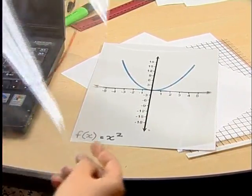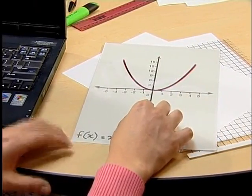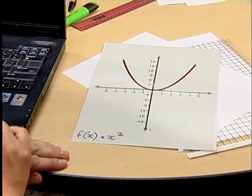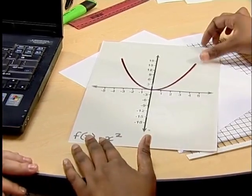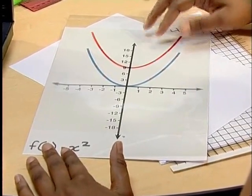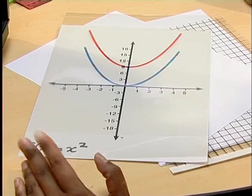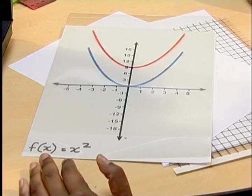On this transparency, I have traced out f of x in a different color. Can you predict what will happen if I slide the transparency upwards? Is this what you mean? It now looks like I have two different graphs of the same shape on top of each other. Perfect. Our challenge is to decide what to do to the equation of the original function, f of x, to describe this translation.